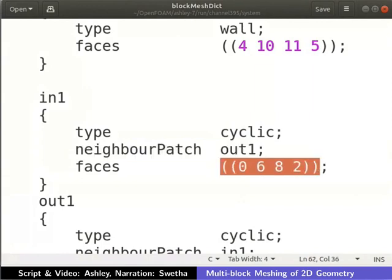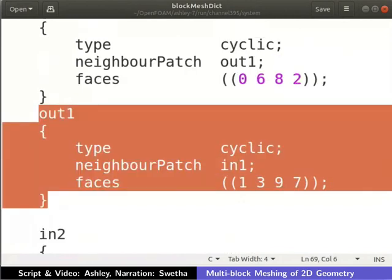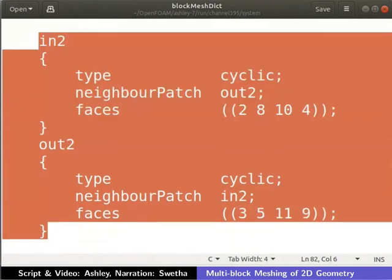The vertices of the inlet face are ordered in clockwise direction when viewed from inside of block 1. The outlet face of block 1 is defined as shown here. The inlet and outlet faces of block 2 are defined as shown here.